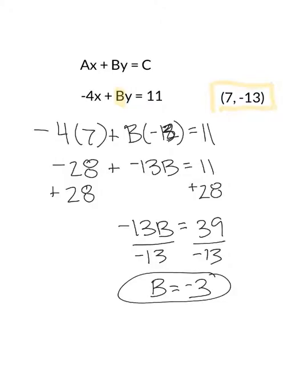And depending on the wording of your question, this could be finished. Or if you're supposed to rewrite the equation, then you would rewrite the equation that you started with. I already had negative 4x plus negative 3y equals 11. And to make that so it doesn't have double signs, I would write negative 4x minus 3y equals 11.